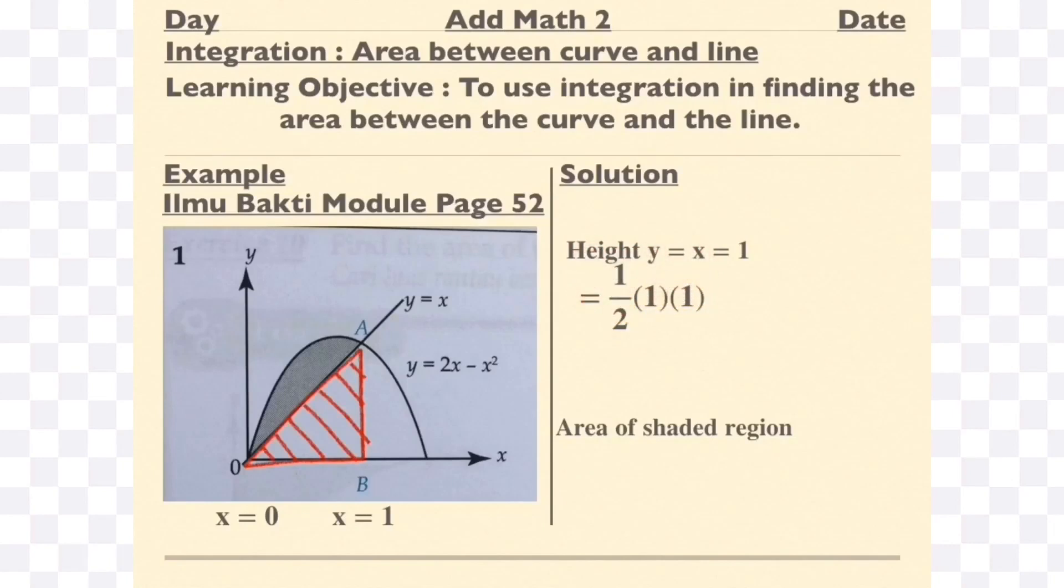To find the height, you simply use y equals x equals 1 because x equals 1. So the height is also 1. The area of the triangle will be 1 over 2.